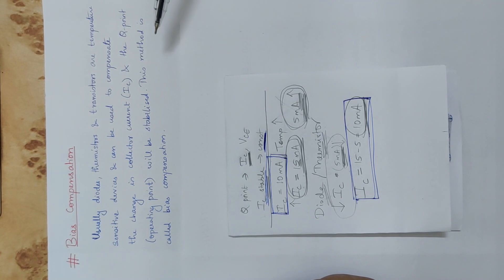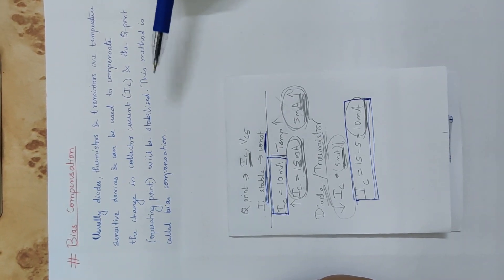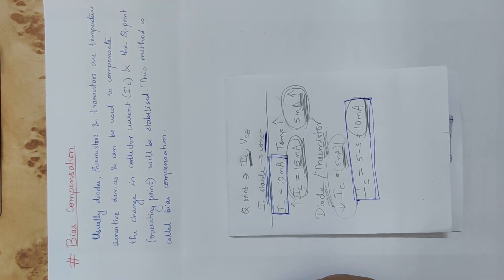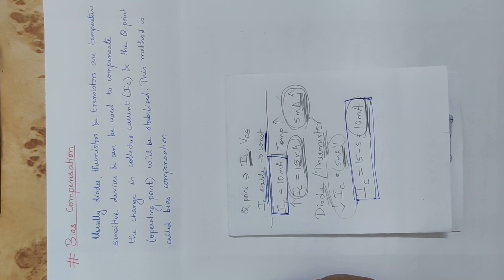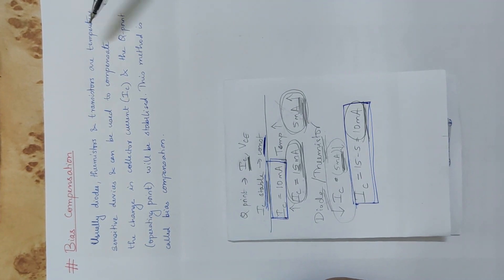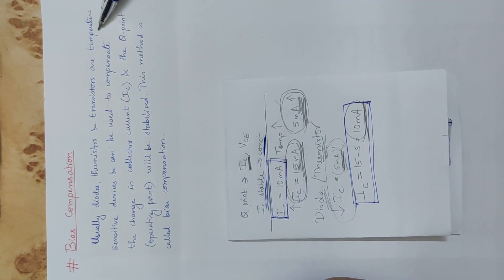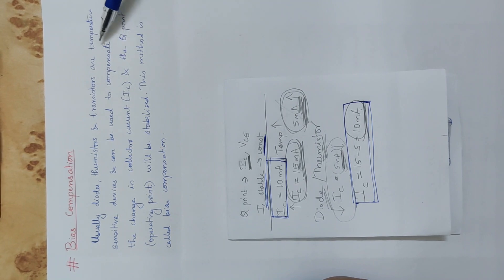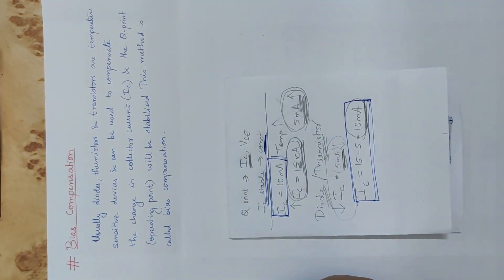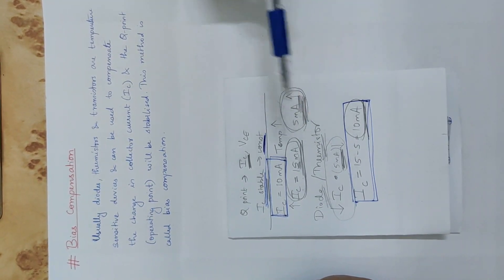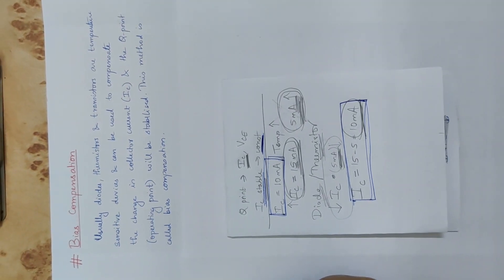This method is called bias compensation. We compensate for the temperature-caused change in collector current by cancelling it using diodes and thermistors, because they are temperature-sensitive devices. With compensation, we have stability. Let's now discuss diode compensation and thermistor compensation.